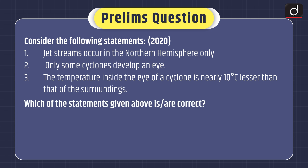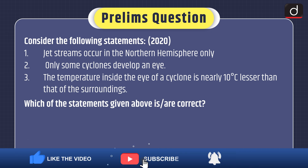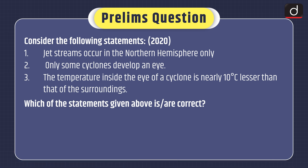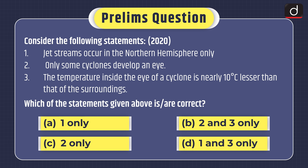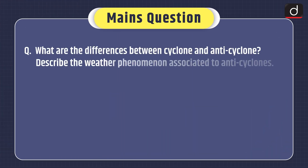That's all for today. Hope this topic is now more understandable to you. Now let's note down the questions. The prelims question asked in the 2022 prelims exam: Consider the following statements — 1. Jet streams occur in the northern hemisphere only. 2. Only some cyclones develop an eye. 3. The temperature inside the eye of a cyclone is nearly 10 degrees Celsius lesser than that of the surroundings. Which of the statements given above is or are correct? Options: 1 only, 2 and 3 only, 2 only, or 1 and 3 only? You can send your answer in the comment section. The mains question: What are the differences between cyclone and anticyclone? Describe the weather phenomena associated with anticyclones. Stay tuned for the next episode. Thanks for watching.